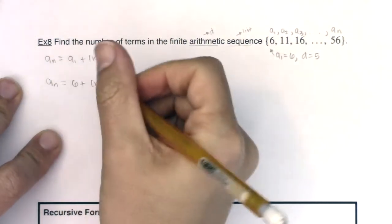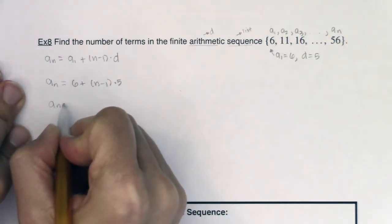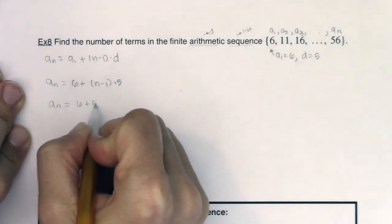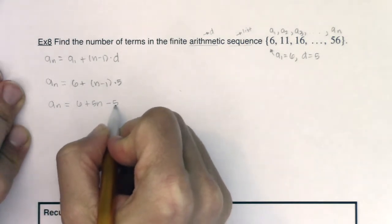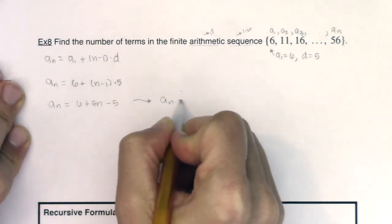Let me simplify this just a little bit. So we have a sub n being 6 plus 5n minus 5. If I work this a little bit more, I know a sub n is equal to 1 plus 5n.